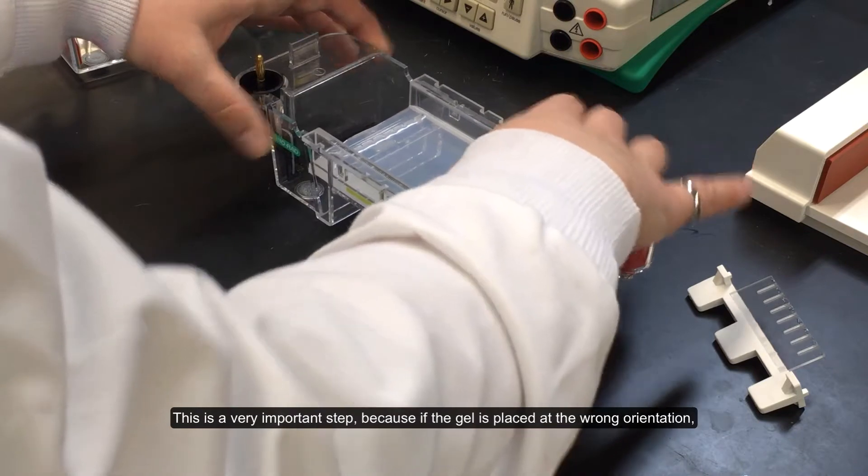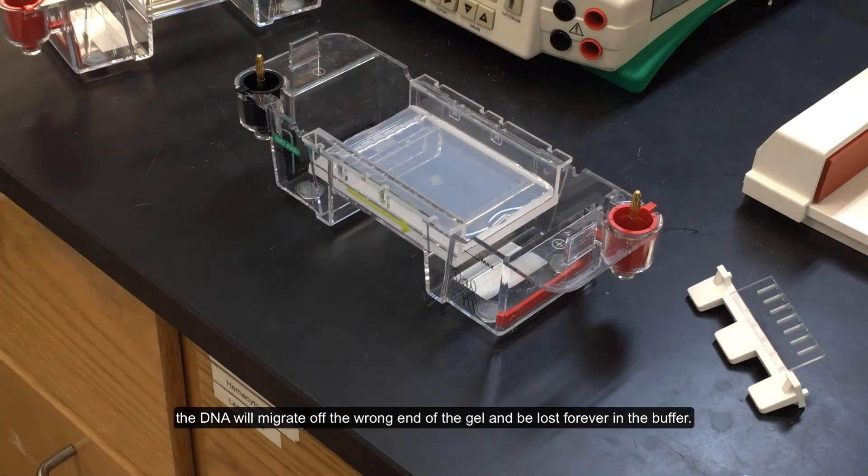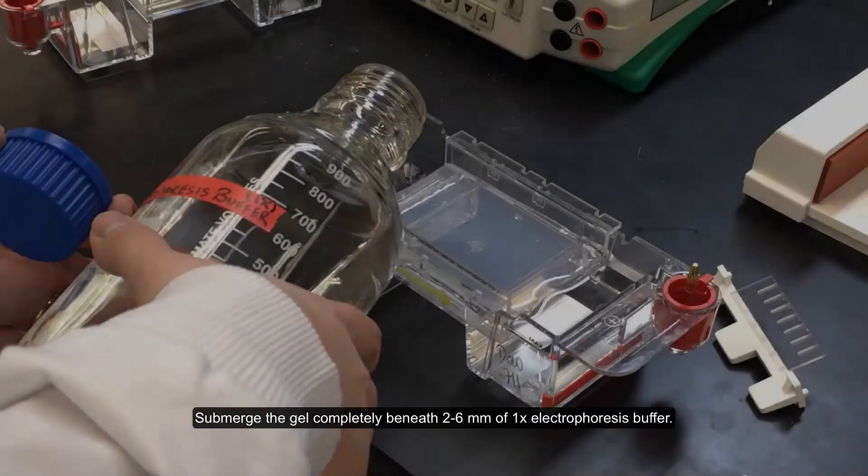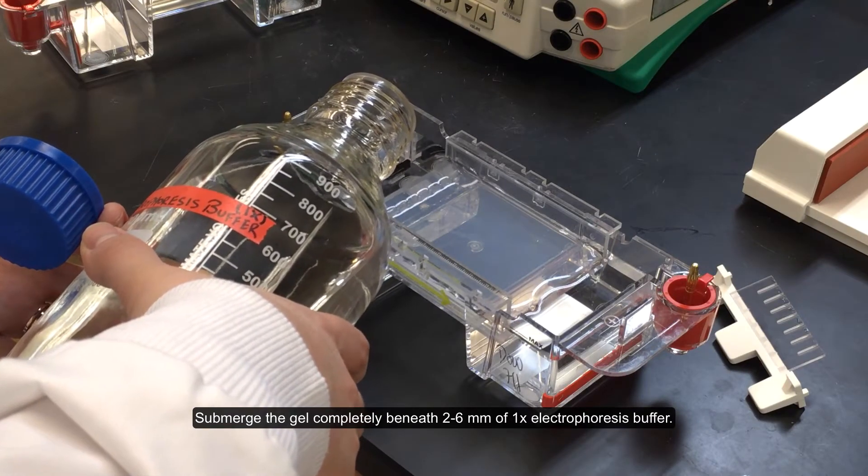This is a very important step, because if the gel is placed at the wrong orientation, the DNA will migrate off the wrong end of the gel and be lost forever in the buffer. Submerge the gel completely beneath 2-6 mm of 1x electrophoresis buffer.